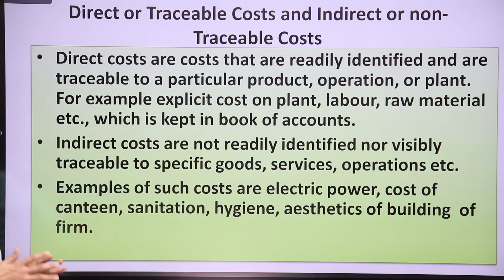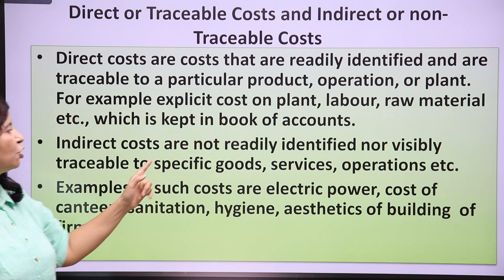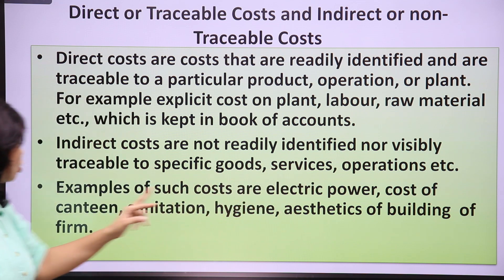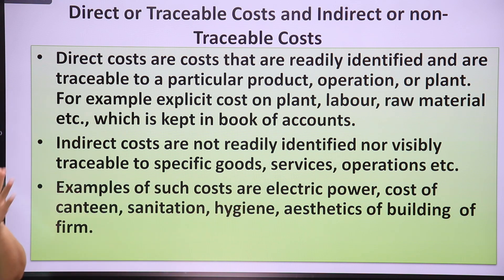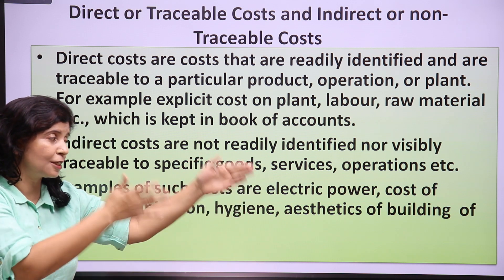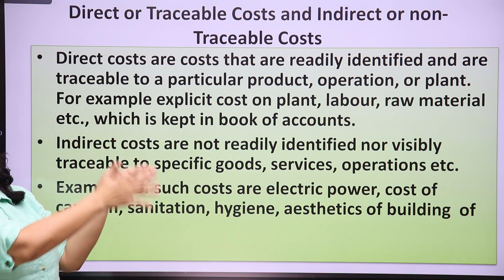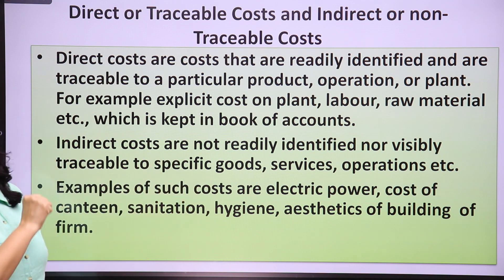Indirect costs are not readily identified nor visibly traceable to specific goods, services or operations. For example, electric power, cost of canteen, sanitation, hygiene, and aesthetics of the building of the firm are all indirect or non-traceable costs. Among these costs, you can't identify what part of the aesthetics or hygiene expenditure was particularly done for increasing the quality or quantity of your production. So they can't directly be traced back to your production activity, and that's why they are known as indirect or non-traceable costs.